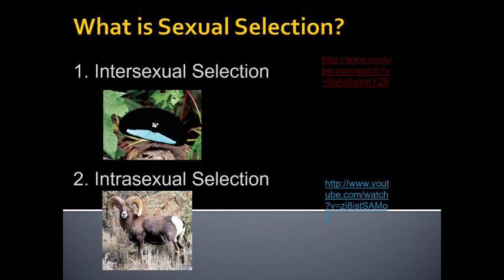The second type of sexual selection is called intrasexual selection. In intrasexual selection, all of the decisions and power — at least the majority of it — is within a single sex. Rather than males competing for the approval of the females, males compete among themselves. They fight, they wrestle, sometimes indirectly. They compete with one another for access to the females. We talked in the last lecture about elephant seals fighting for a stretch of beach real estate that enables them to mate with the females. That's a form of intrasexual selection.